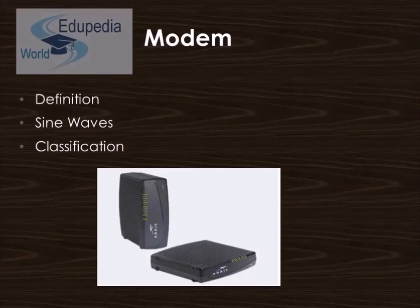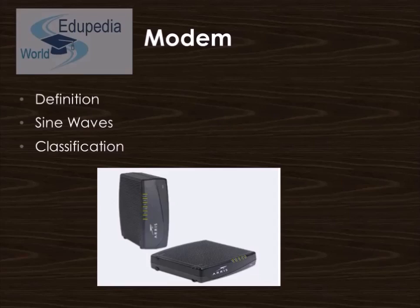Modems are generally classified by the amount of data they can send in a given unit of time, usually expressed as bits per second or bytes per second. They can also be classified by their symbol rate measured in baud. The baud unit denotes symbols per second, or the number of times per second the modem sends a new signal. Here is a picture of a modem which is present in each and every network classification, either a local area network or a wide area network.